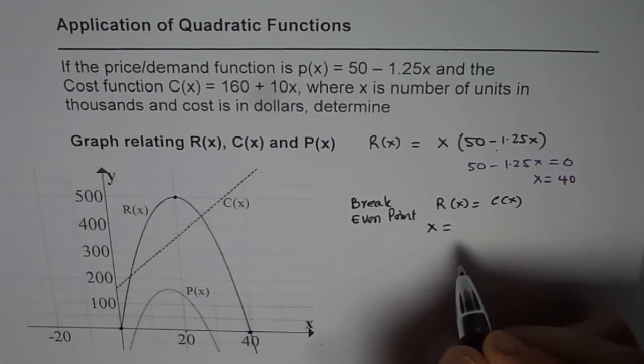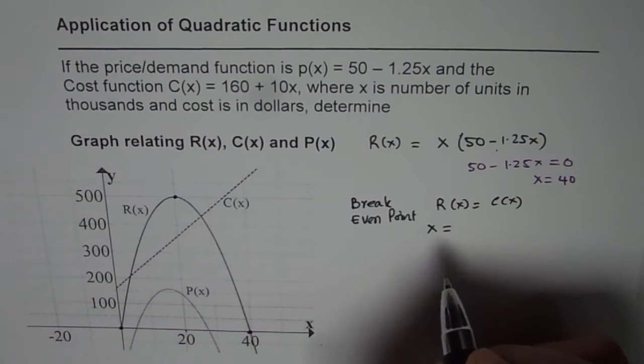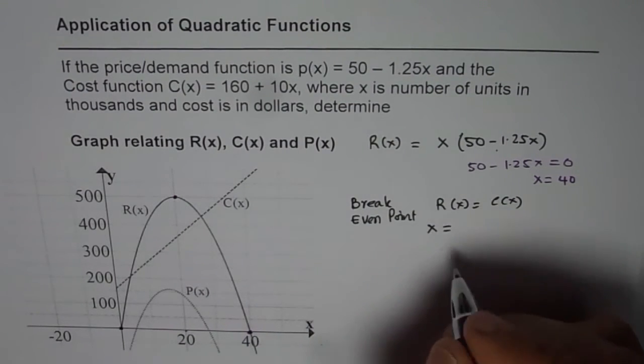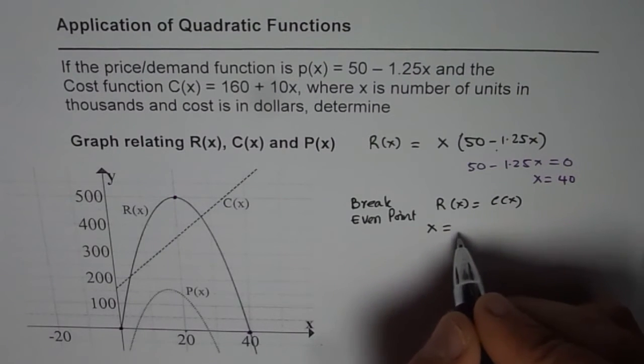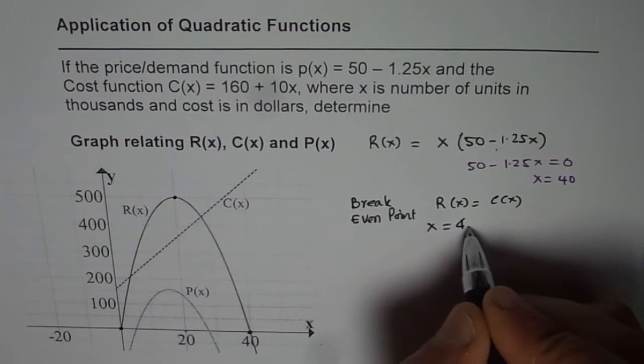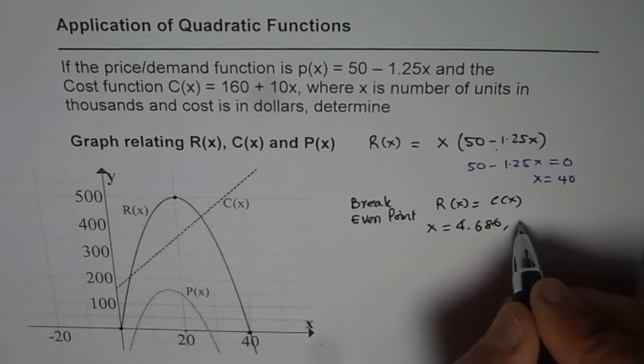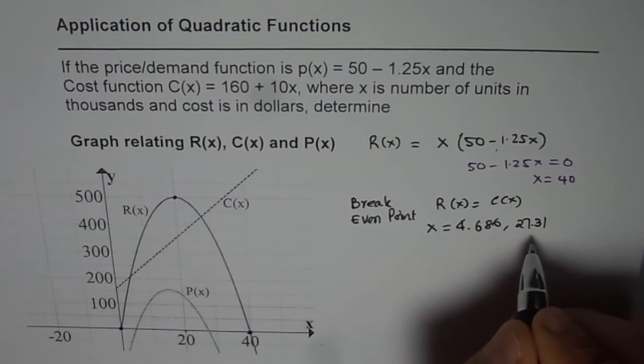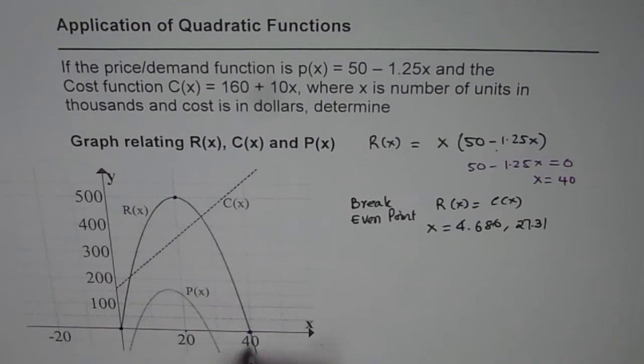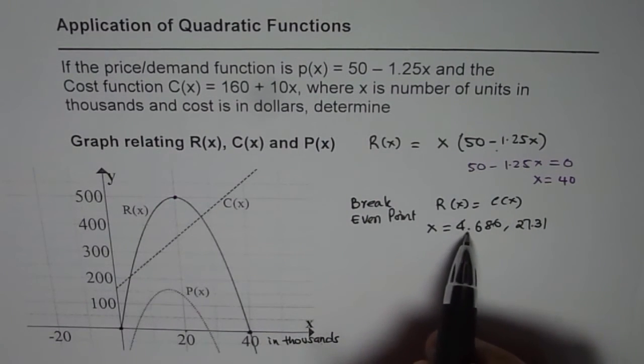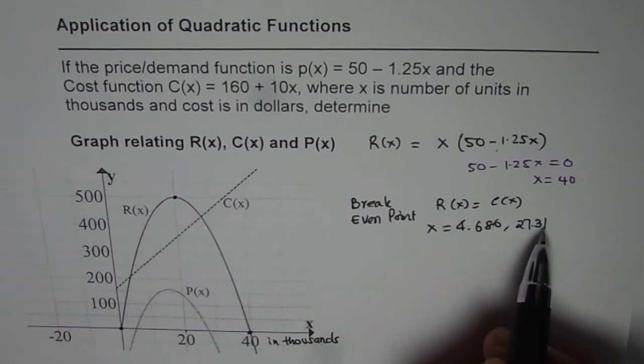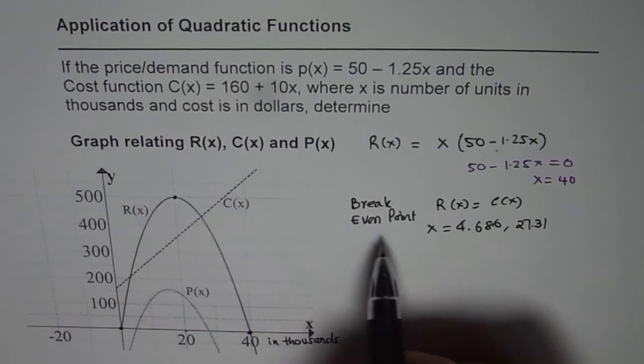So you have to equate this revenue function with the cost function and we found the break-even was for x equals to number of items. Let me pull it out from my previous video which was 4.686 or it was 27.31, these values are in thousands. So 4.686 and 27.31 in thousands.